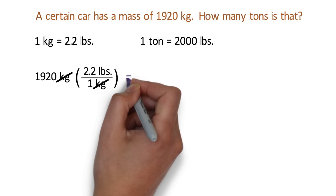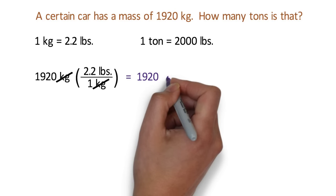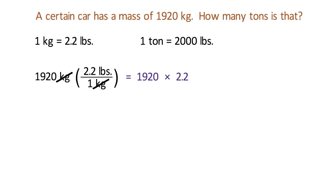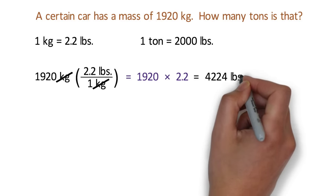When you do the math in your calculator, simply multiply 1920 by 2.2. This time we are multiplying the numbers because the 1 of the conversion factor is on the bottom of the fraction. Our calculator tells us that the answer is 4,224 pounds.